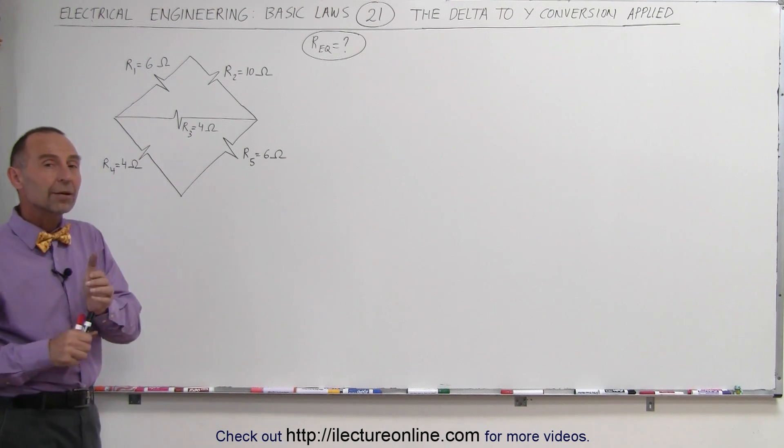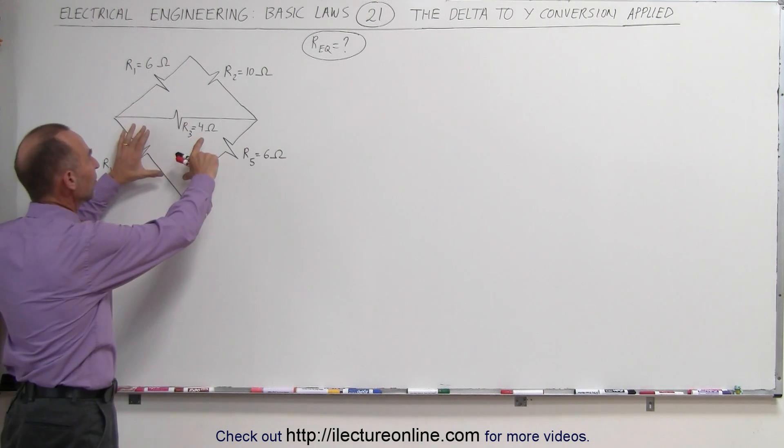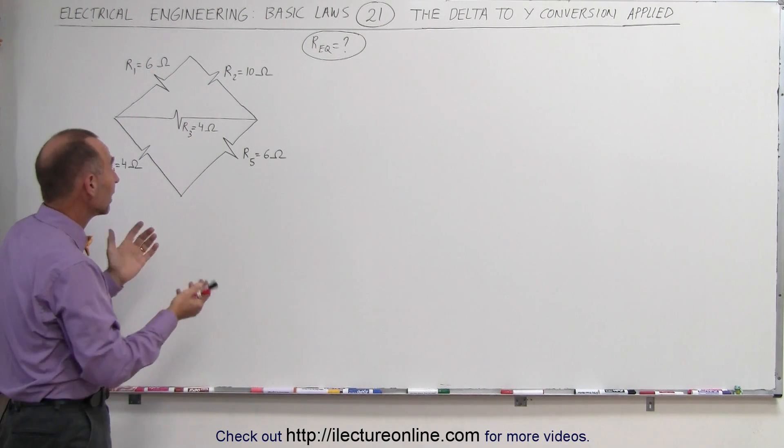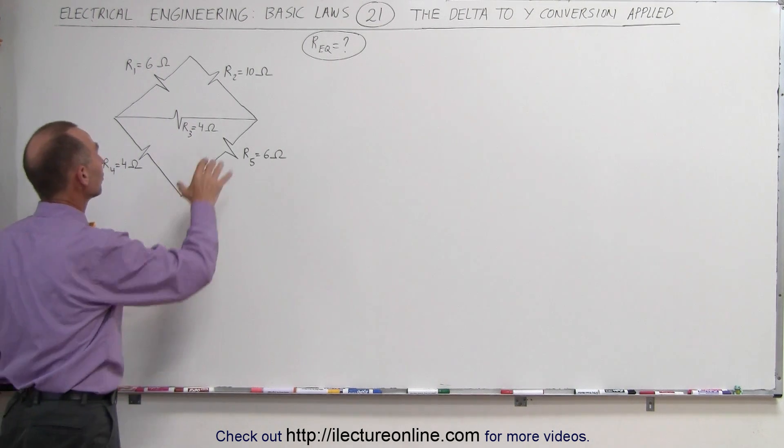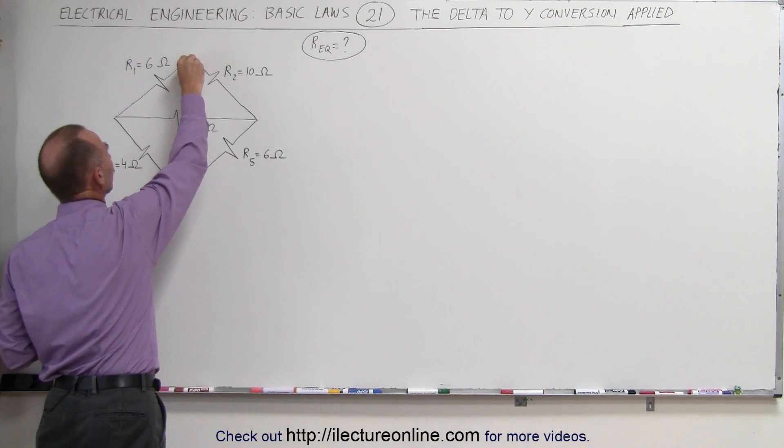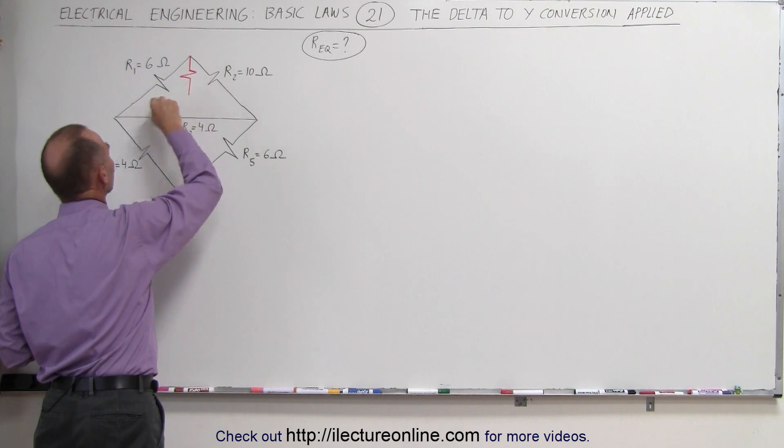What we're going to do here, instead of doing the bottom half, we're going to do the top half conversion. It doesn't matter which half you take, so you can see that it can work both ways. But we're going to take the top delta and convert it into a Y format, so this will then look as follows.